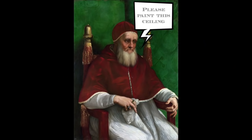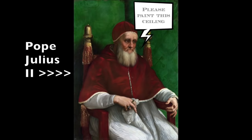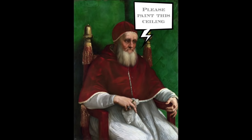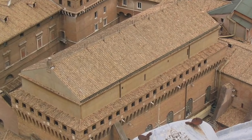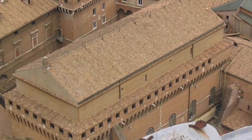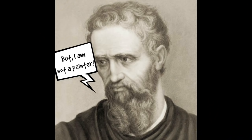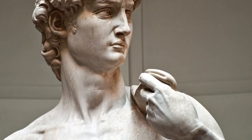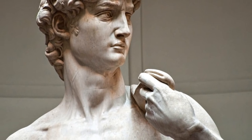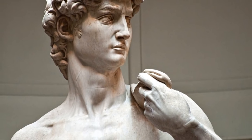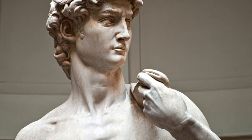Let's start at the beginning. In 1508, Pope Julius II approached Michelangelo and said that he wanted the artist to paint 12 characters from the Bible on the ceiling of the Sistine Chapel. Michelangelo said to the Pope, "But I'm a sculptor, not a painter," and pointed to his famous sculpture of David, a character from the biblical story David and Goliath.